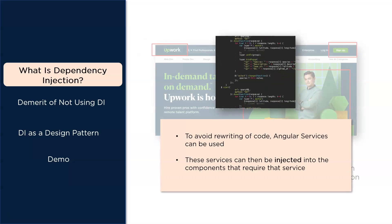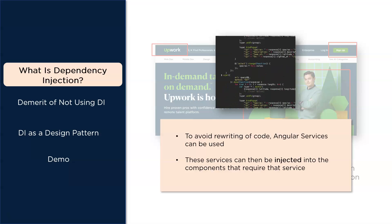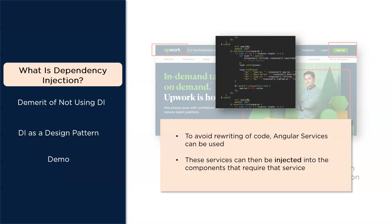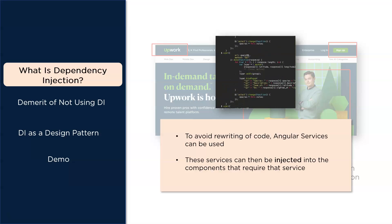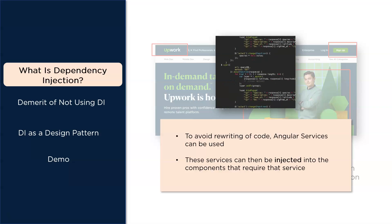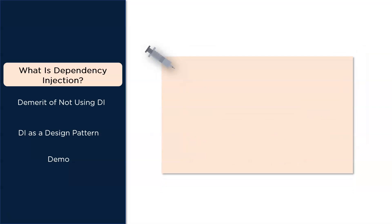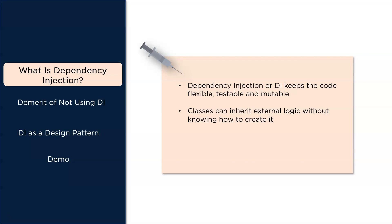Consider two classes A and B. Assume that A uses the objects of class B. Normally in object-oriented programming, an instance of class B is created so that A can access its objects. But using dependency injection, we move the creation and binding of dependent objects outside of the class that depends on them. DI keeps the code more flexible, testable, and mutable. Classes can inherit external logic without having to create it on their own.